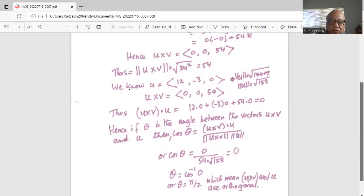Similarly, you can show u cross v and v are also orthogonal by finding the angle between them, which would be pi by 2.